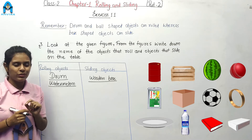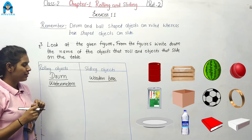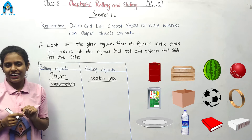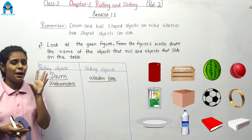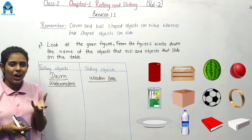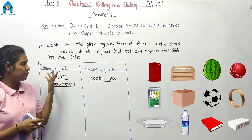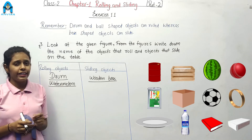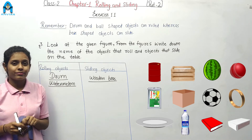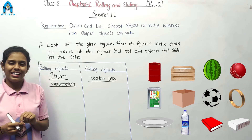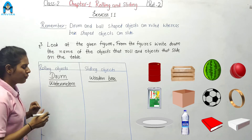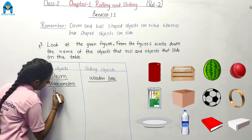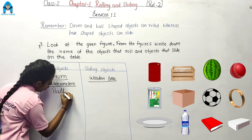Let's go to the next object. What is this? This is a ball. Is ball rolling or sliding? Ball is rolling. So, we are writing ball on the rolling side.